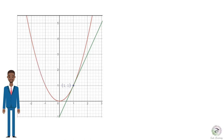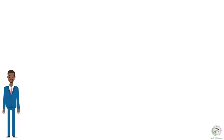We only know one point on the tangent line, but the slope formula requires two points. The derivative gets around this problem by expressing the slope of the tangent line as a limit of slopes of secant lines. Let's look at the definition of the derivative. For the demonstration we use a graph of a parabola, but the definition works for any function.